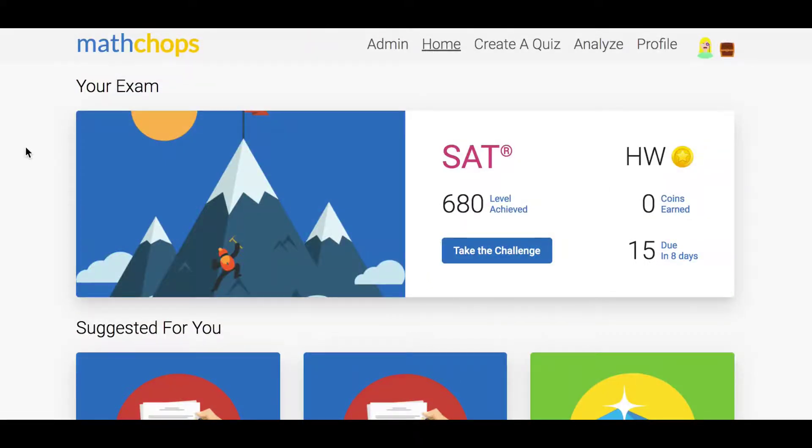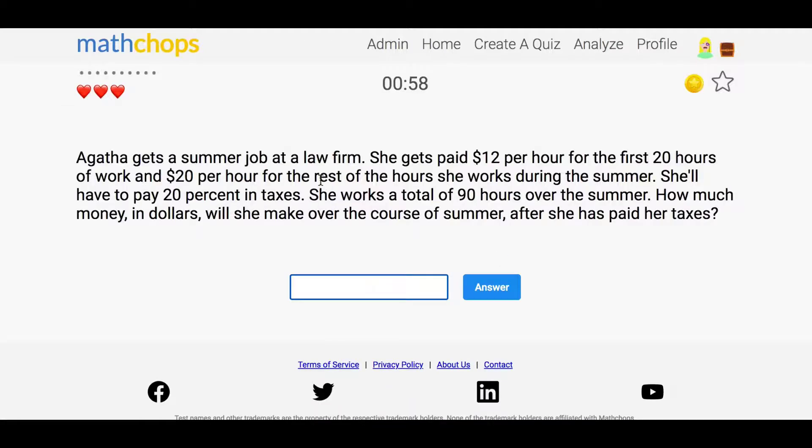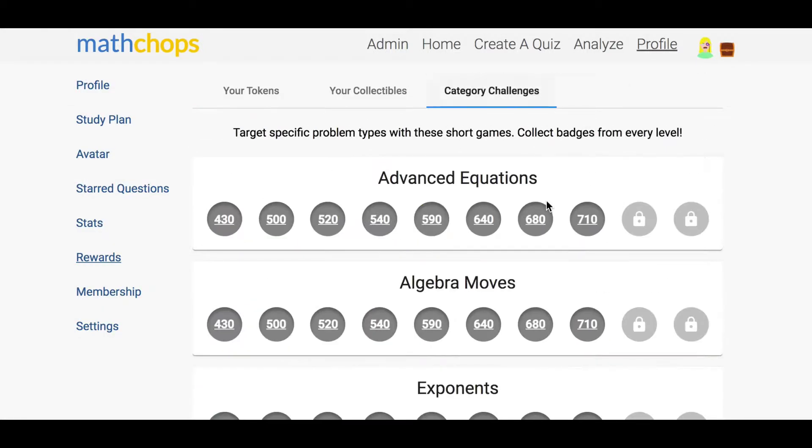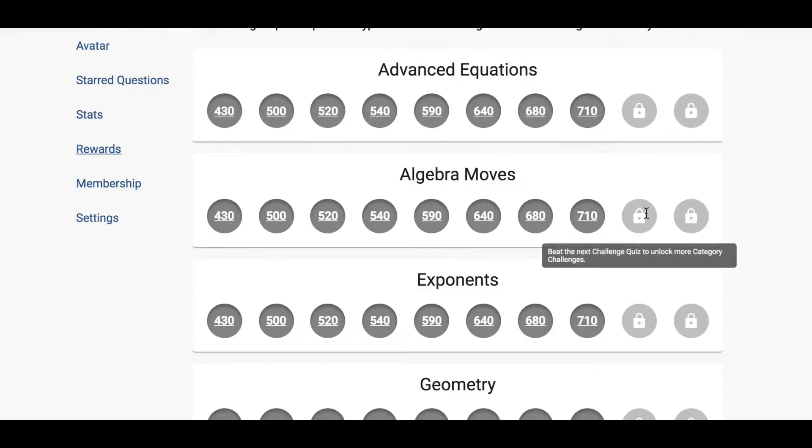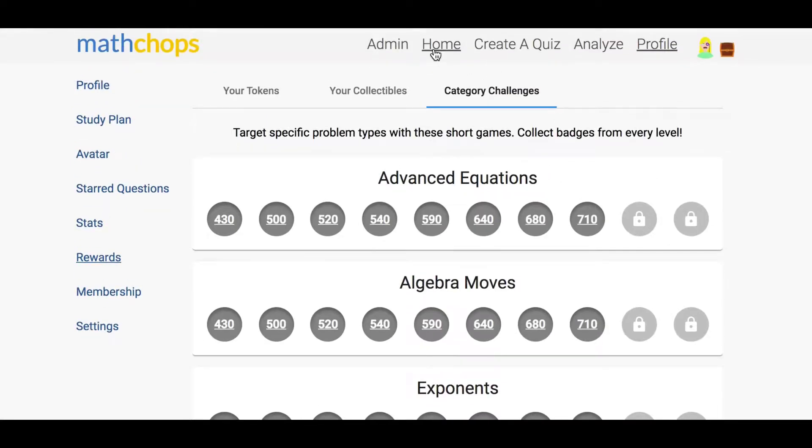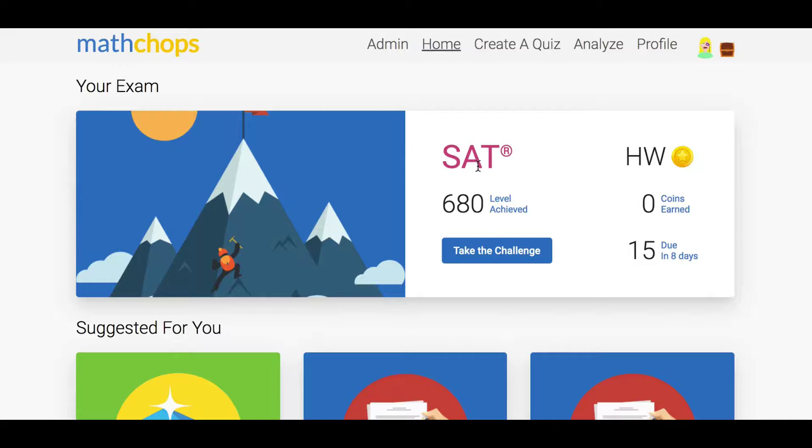For homework, the student is mostly going to be going back and forth between the level challenge and the category challenges. So when this level is too low, they'll take this challenge, try to get the score up. When this level is accurate, they'll go over to the category challenges and work through all the different areas and badges. These ones will get unlocked as their level goes up. And you can really cover a lot of ground just going back and forth between those two types of quizzes.